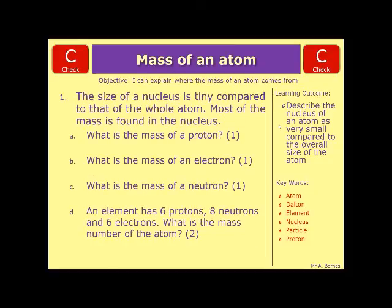Okay, let's have a look then. So if we start off with what is the mass of a proton, that's just basically remembering that it's 1. The electron is either 1 divided by 1837 or 0. You'd have got the mark for either of those. The mass of a neutron is 1.